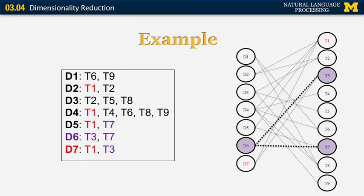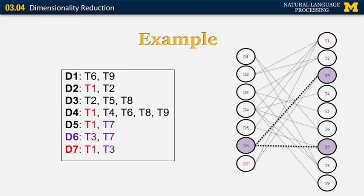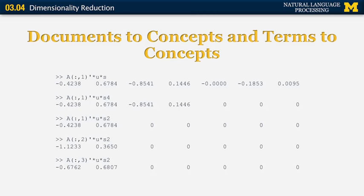This is something you can understand better by looking at the original example in its graph representation. D6 is represented by terms T3 and T7. D7 is similar to D6 because it shares many common terms with D6. Continuing to expand this recursively, D2 is the next most similar document, followed by D4, and so on — which is exactly the intuition you would get from looking at the graph representation. For those who want more detail, there are MATLAB formulas that allow you to translate individual documents and terms to concepts by multiplying either a column vector or a row vector with the singular value matrix.